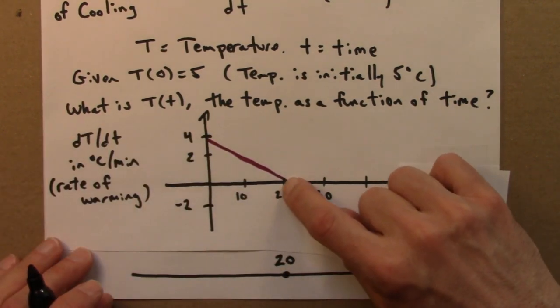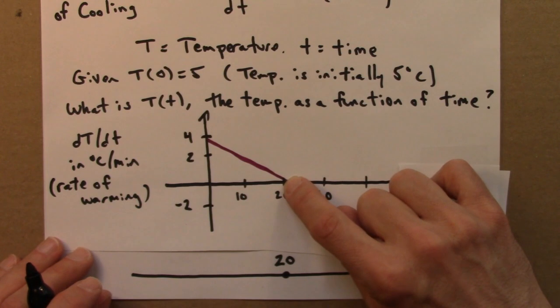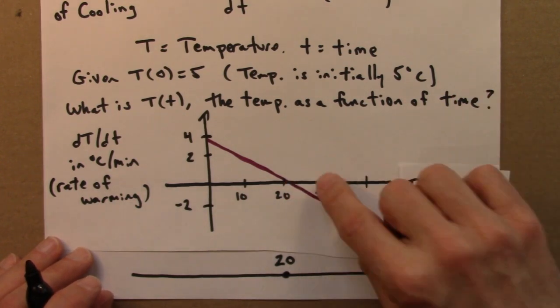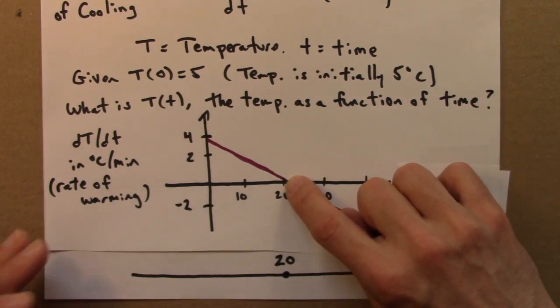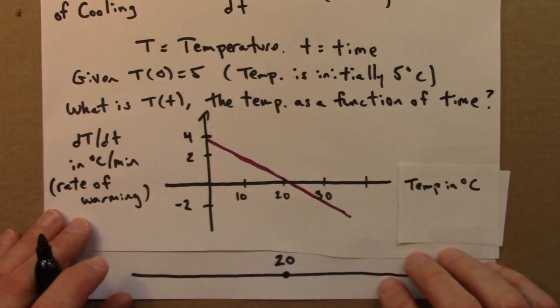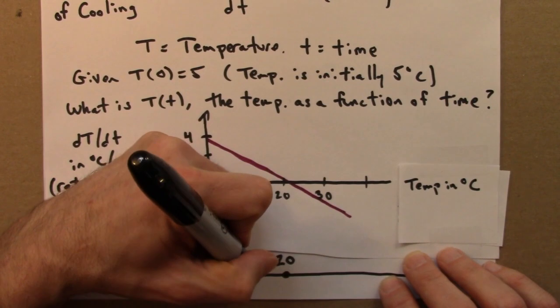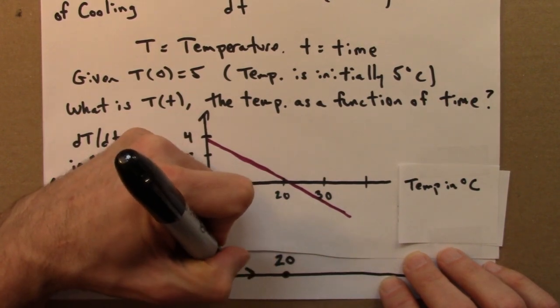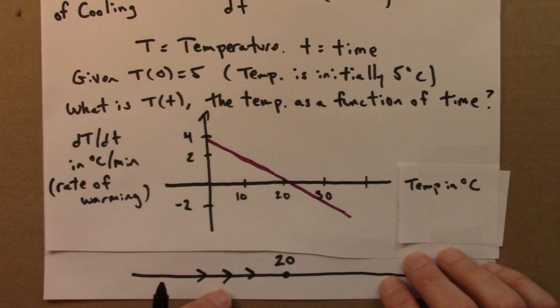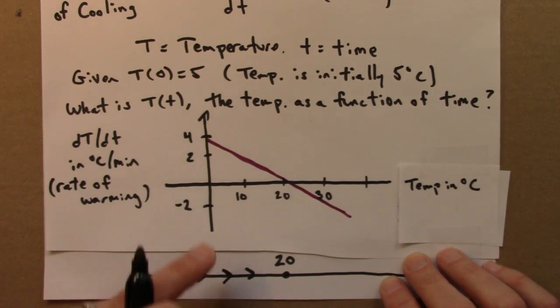20 is fixed because the rate of change when the temperature is 20 is 0. If you put a glass of water that's at room temperature in a room of 20 degrees, it will stay at 20 degrees. If we are below 20, cooler than 20, we know that the water, the object, will warm up. And we know that from everyday experience. We can also see that from this graph.